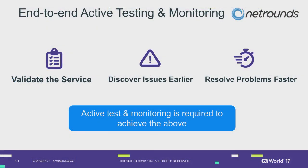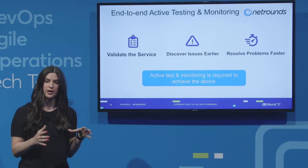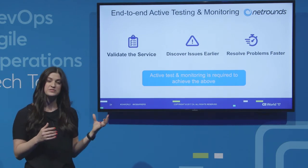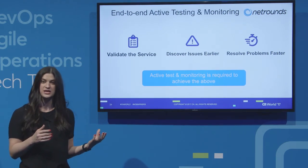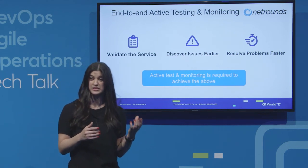As the final takeaway from this demo, when you start a new branch office, it's really important to validate connectivity and the service quality you're providing to your end customers. We can do this using active testing and monitoring, integrating that data into CA Performance Center and correlating it with CA Performance Metrics for a more holistic view. Ongoing monitoring ensures you're continuously meeting SLAs and providing customers the service quality they're expecting.